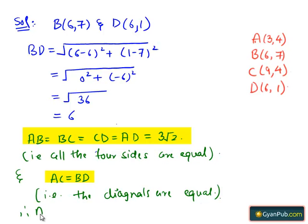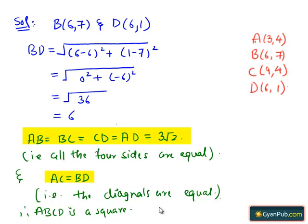Therefore, ABCD is a square since all four sides are equal and the diagonals are also equal. We can say that Champa is correct.